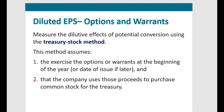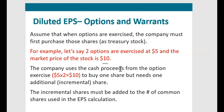Now let's move to the third type of dilutive security: options and warrants, treated as the same thing for our purposes. When employees exercise stock options, we measure the dilutive effect using the treasury stock method. If 100 options are exercised, we don't just add 100 shares to the denominator. We assume the company uses cash received from the exercise to purchase common stock for the treasury.